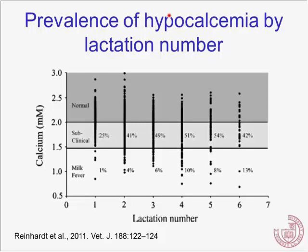That older dataset showed 25% of first-calf heifers categorized as subclinically hypocalcemic. For older cows, 40% to 60% were subclinical, plus some percentage clinically hypocalcemic post-calving. If we redrew the line based on what we know now, we'd characterize even more cows as subclinically hypocalcemic. This brings up the iceberg question: even if clinical milk fever rates are down to 1% to 3% of cows, what's happening below the surface? Is that subclinical hypocalcemia important, and do we need to do anything about it beyond just preventing clinical milk fever?